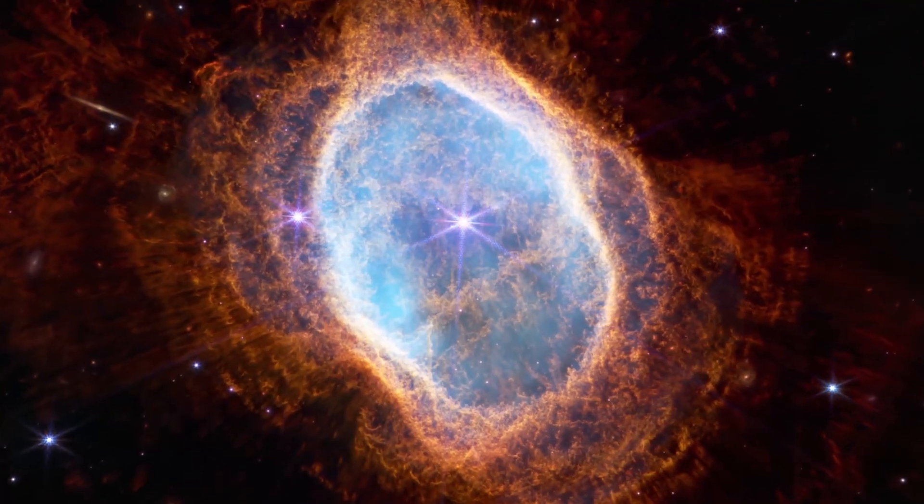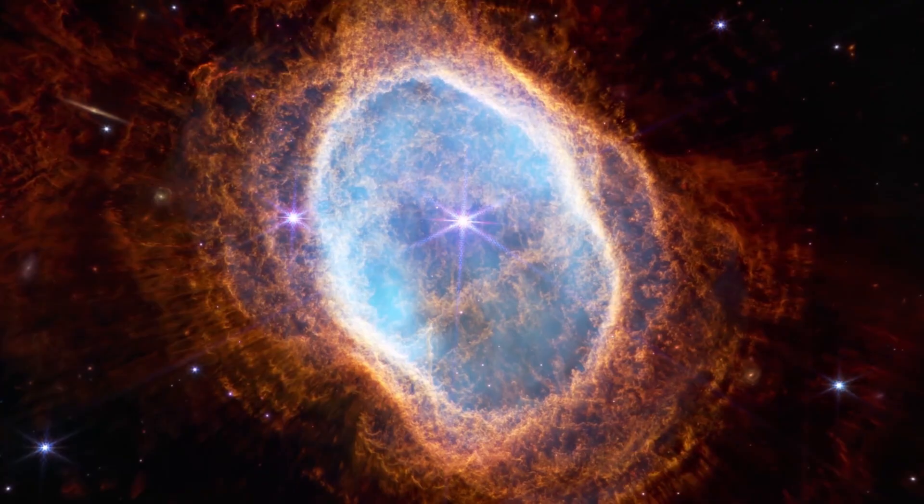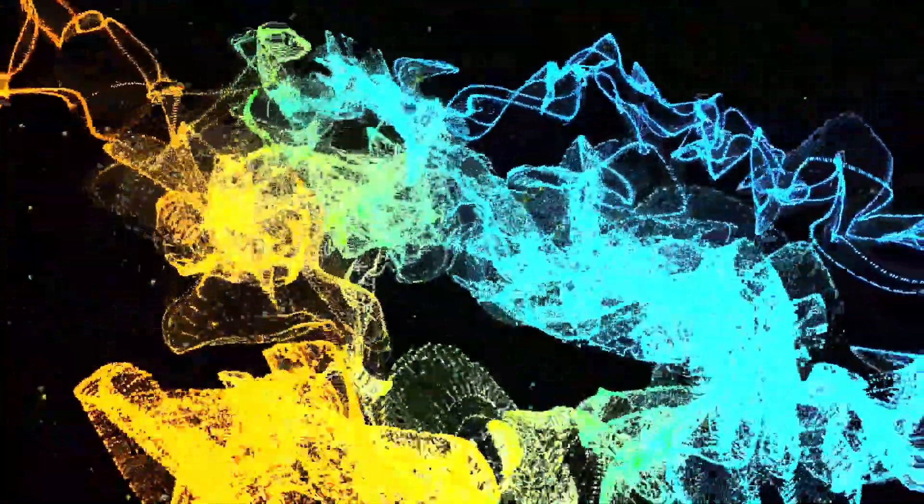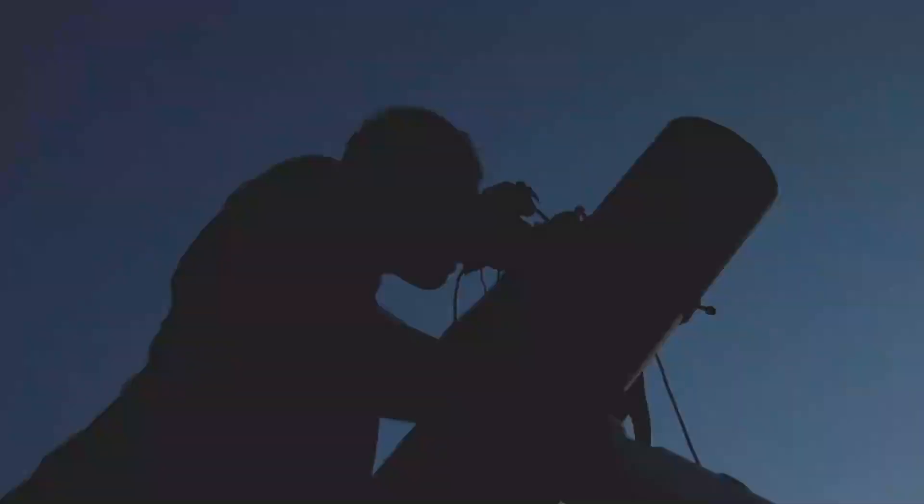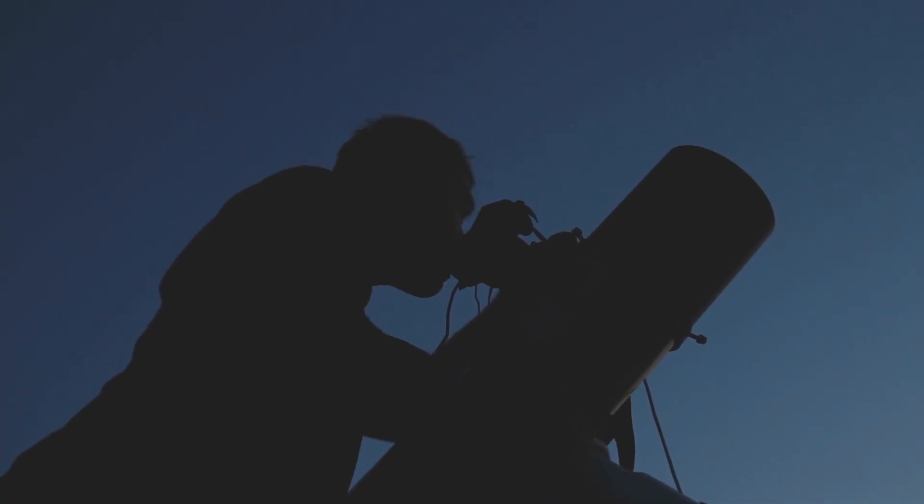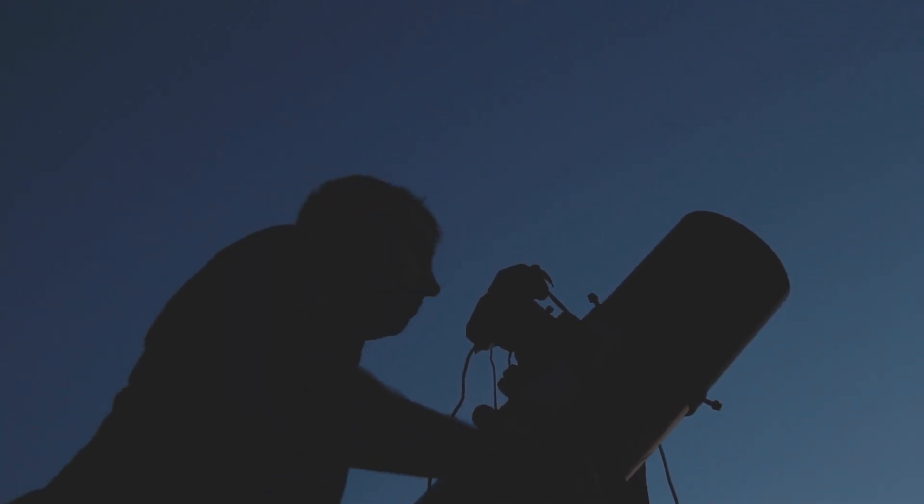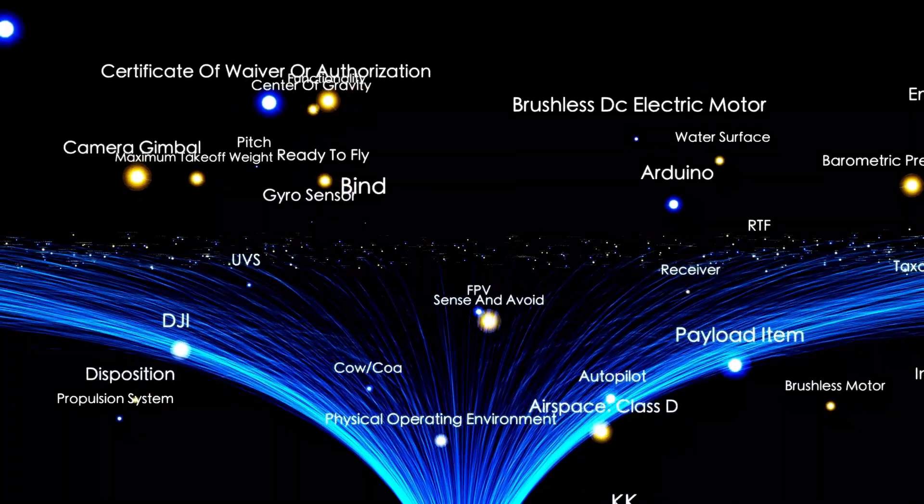Let's step back and consider what makes Betelgeuse so special. It's not just its size or its impending doom, it's what it tells us about the universe. Every atom in your body, from the carbon in your bones to the iron in your blood, was forged in the hearts of stars like Betelgeuse billions of years ago. Ancient stars lived, burned, and died in supernova explosions, scattering their elements across the cosmos.